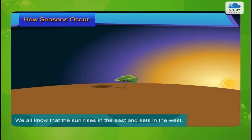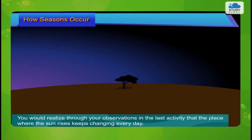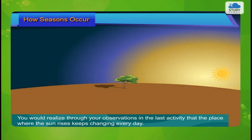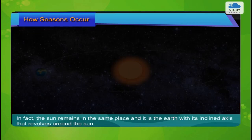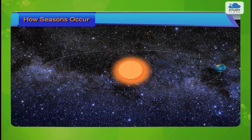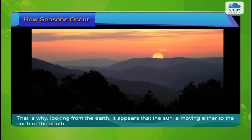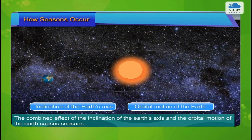We all know that the Sun rises in the east and sets in the west. You would realize through your observations in the last activity that the place where the Sun rises keeps changing every day. In fact, the Sun remains in the same place and it is the Earth with its inclined axis that revolves around the Sun. That is why, looking from the Earth, it appears that the Sun is moving either to the north or to the south. The combined effect of the inclination of the Earth's axis and the orbital motion of the Earth causes seasons.